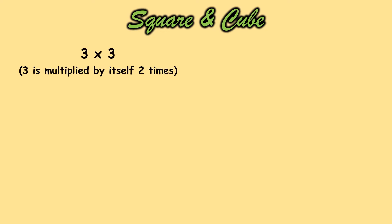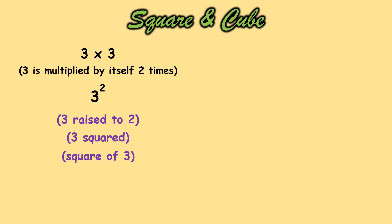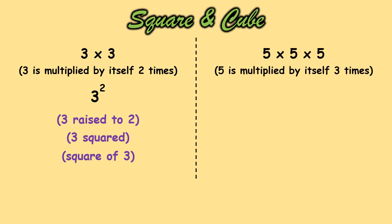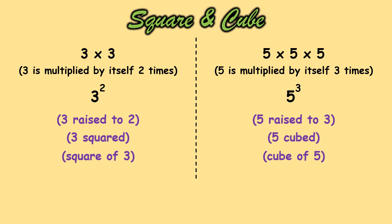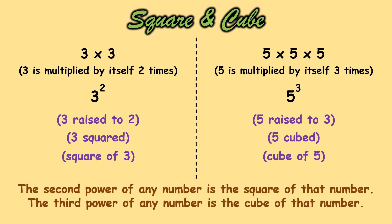Let's move ahead with the chapter: square and cube. For example, 3 into 3 means 3 is multiplied by itself two times. I can write it as 3 raised to 2, but there is another way of reading it — 3 squared or square of 3. Similarly, when 5 is multiplied by itself three times, I can read it as 5 raised to 3, 5 cubed, or cube of 5. In short, when the index is 2, it is the square of that number; when the index is 3, it is the cube of that number.